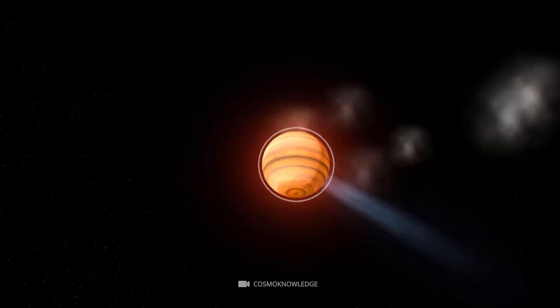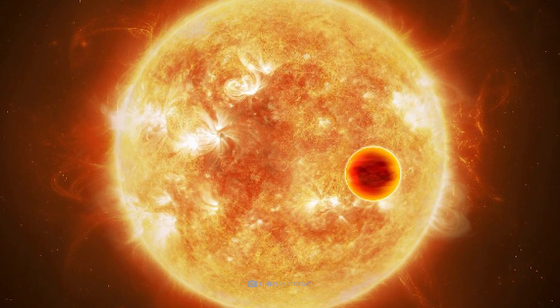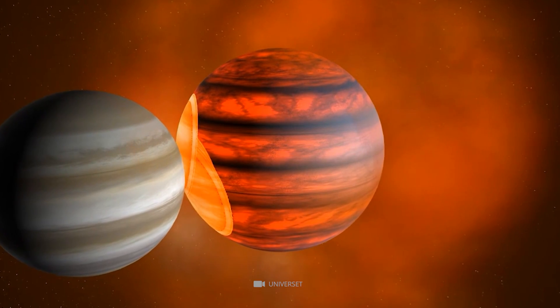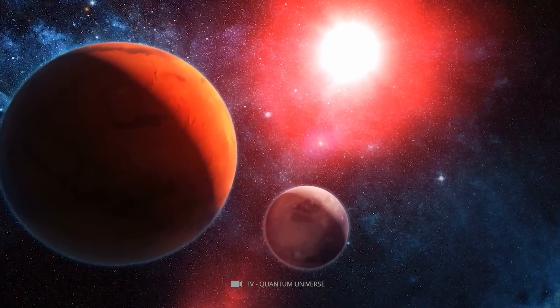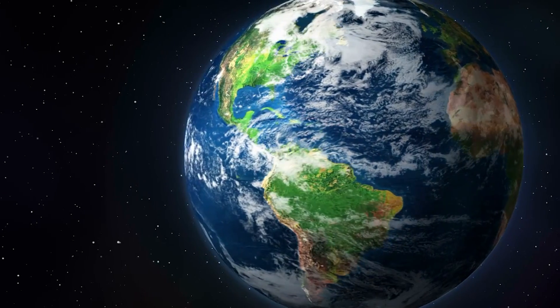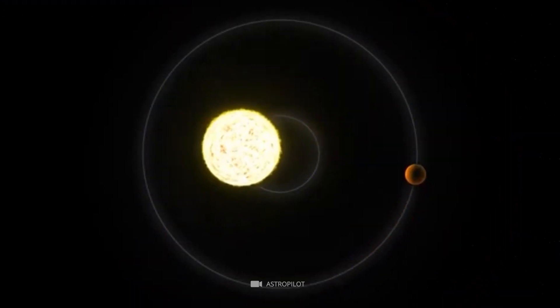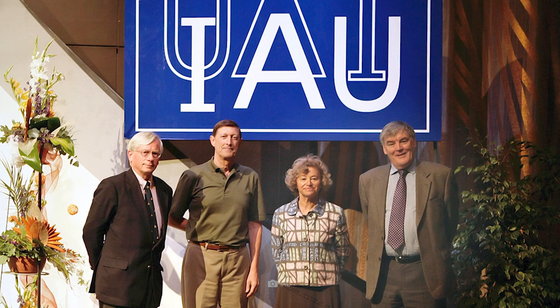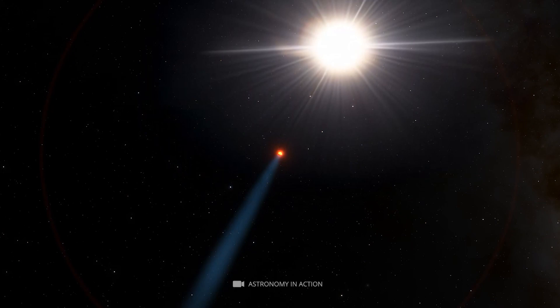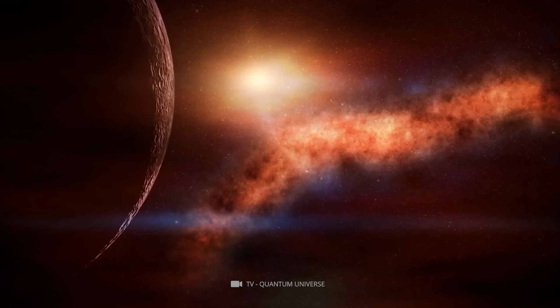One interesting fact about 51 Pegasi B is that its discoverers initially believed they had stumbled upon a brown dwarf star instead of a planet due to its mass being almost half that of Jupiter's, 17 times more massive than Earth. But further analysis confirmed their suspicion that they were looking at an exoplanet. To honor their monumental discovery, the International Astronomical Union named this exoplanet Dimitium, Latin for half, but also gave it another name, Bellerophon, after one of the legendary heroes from Greek mythology.